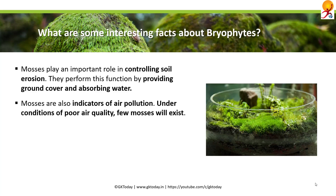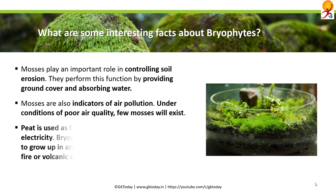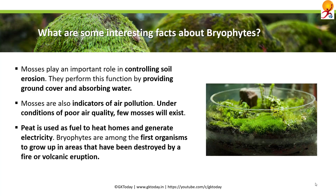Mosses are also indicators of air pollution. Under conditions of poor air quality, few mosses will exist, so if there are no mosses in a region, it is safe to assume that region has polluted air. Peat moss is used as fuel to heat homes and generate electricity. Bryophytes are among the first organisms to grow in areas destroyed by fire or volcanic eruptions — mosses are the first ones to appear when greenery returns.